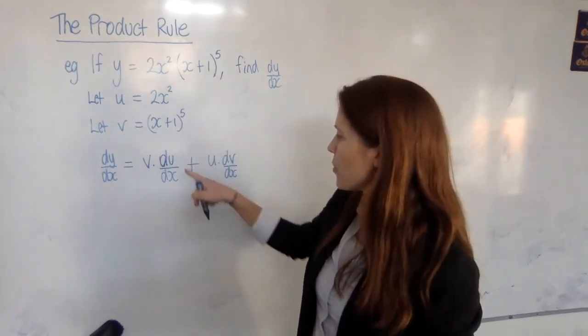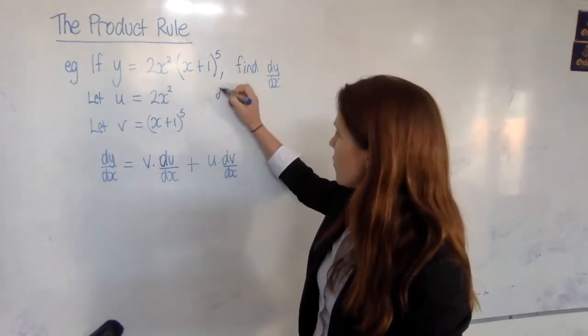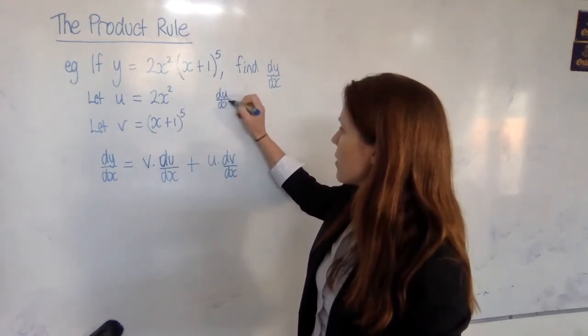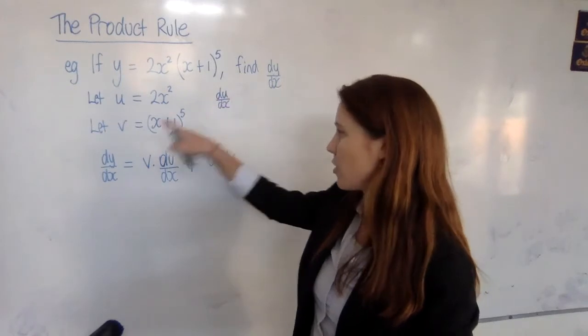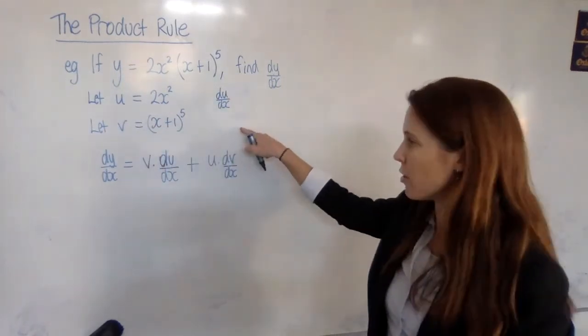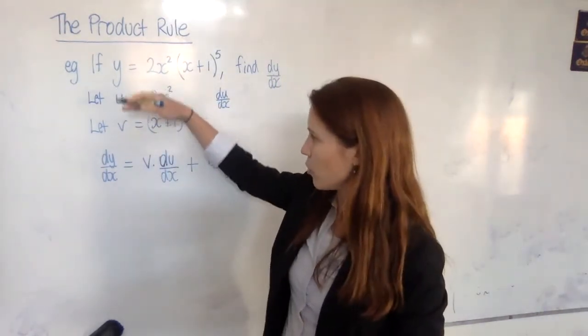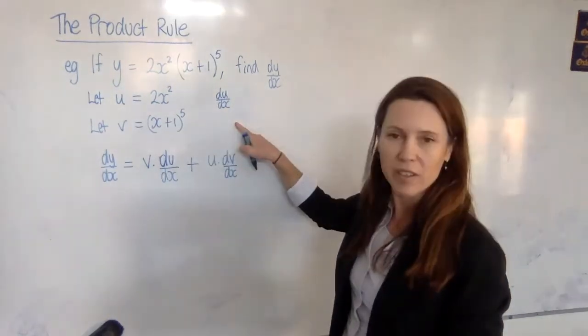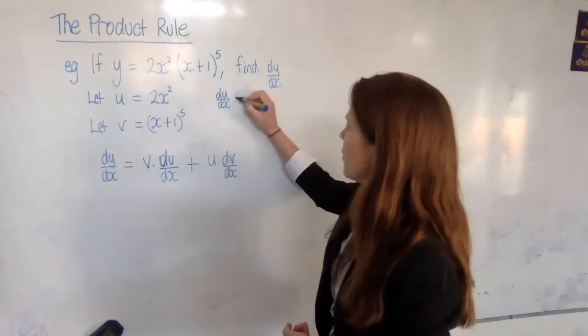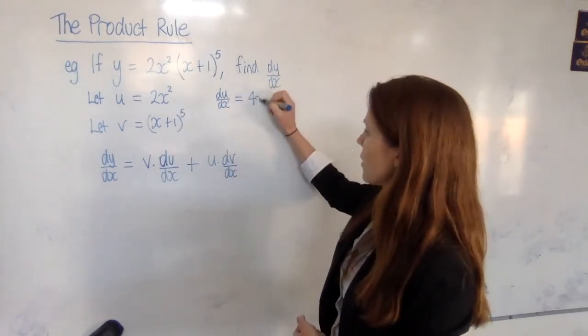Now we need to differentiate both of those. We need du/dx. So differentiate u with respect to x. And I like to do that beside the u. So I have u and its differentiation, and v and its differentiation. Some people like to put all four things one after the other, but I feel like these two go together, and those two go together. So to me, that makes sense. So I need to differentiate this, and I'll get 4x.